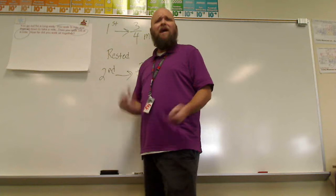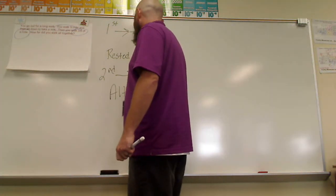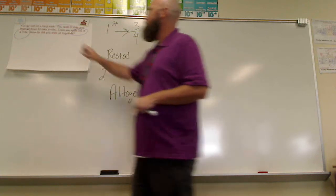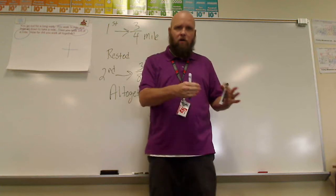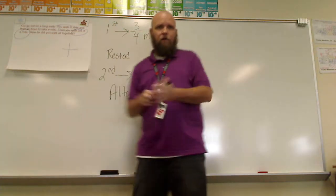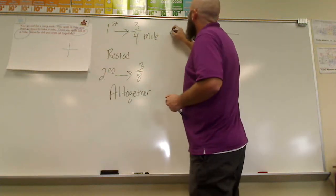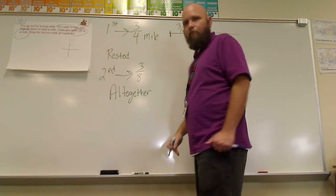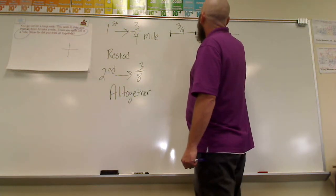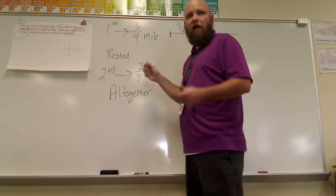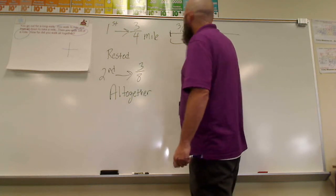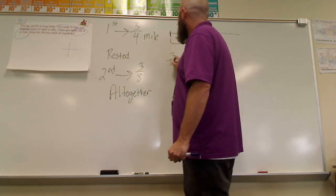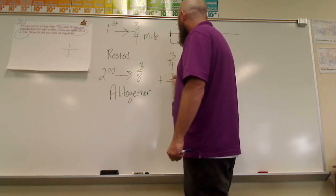And then we have: how far did you walk altogether? So the first time you walked three-fourths of a mile, then you rested, and the second part you walked three-eighths of a mile. The word 'altogether' tells us it's an addition problem — because you walked this far, then you walked that far, and we want to know the total distance. So we add three-fourths plus three-eighths.